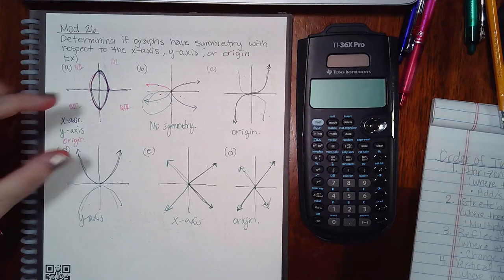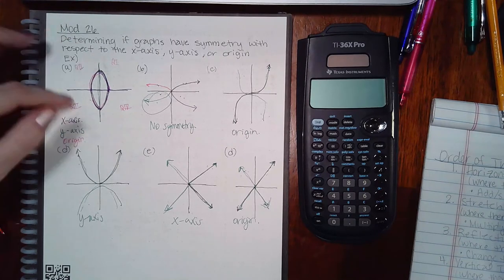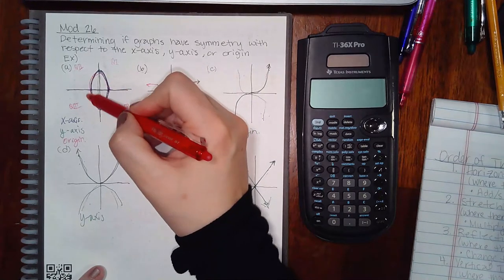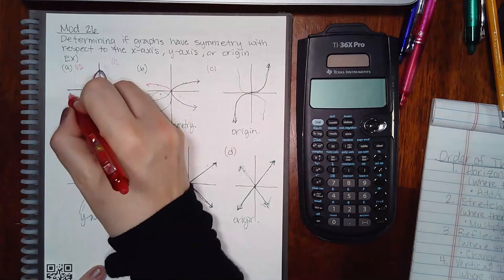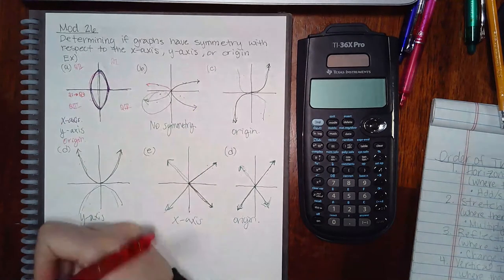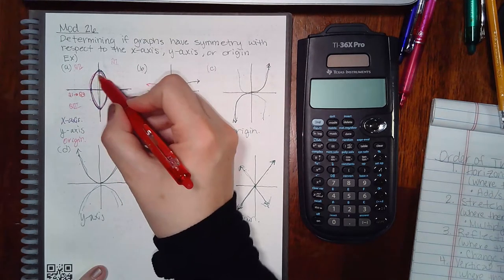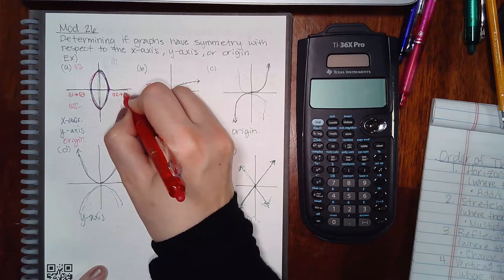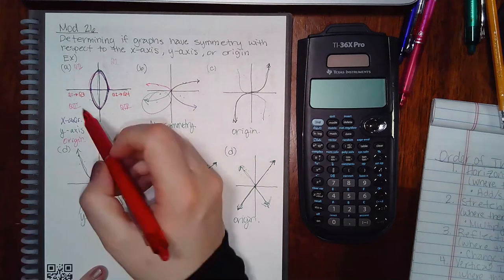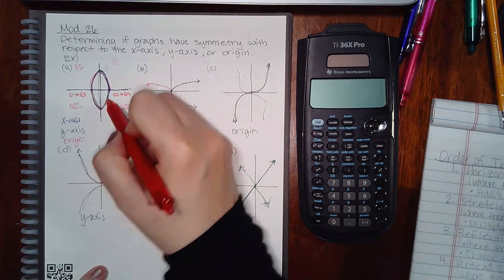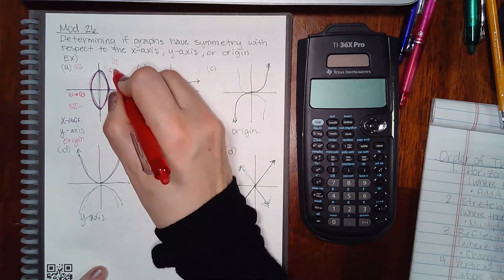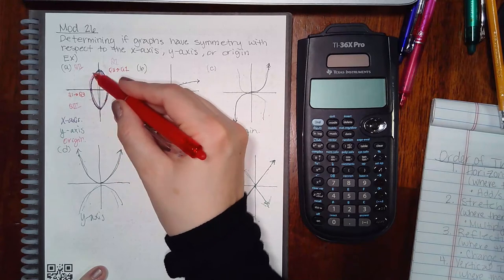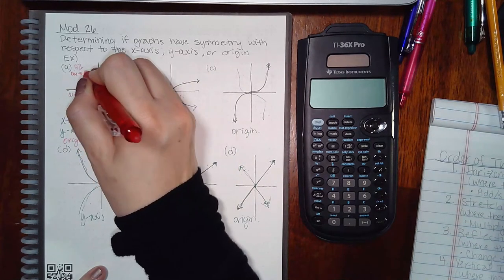I took what was in quadrant one and flipped it over the y-axis, then flipped it over the x-axis, and it landed on what was in quadrant three. Then quadrant two flipped over the y-axis and then the x-axis, landing on quadrant four. Quadrant three landed on quadrant one, and quadrant four landed on quadrant two.